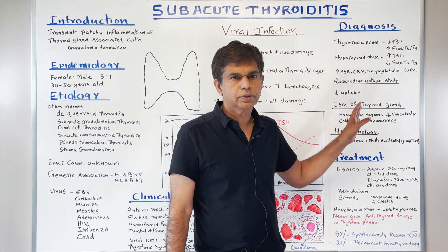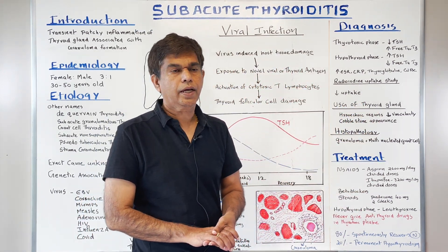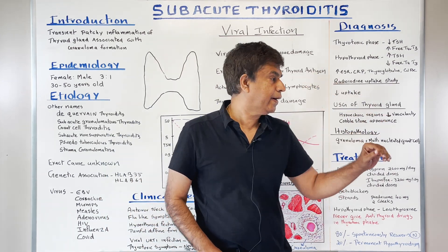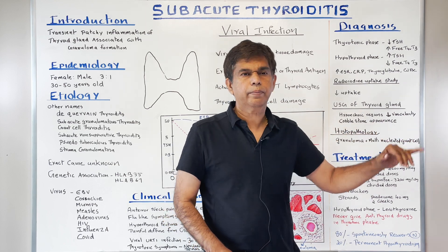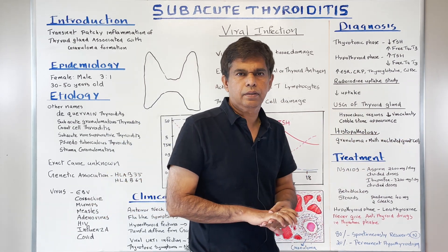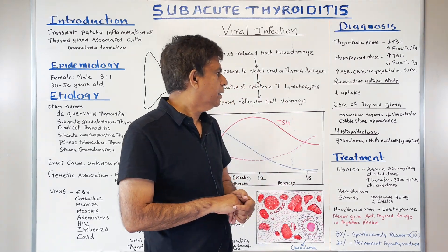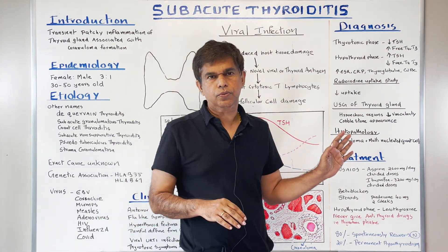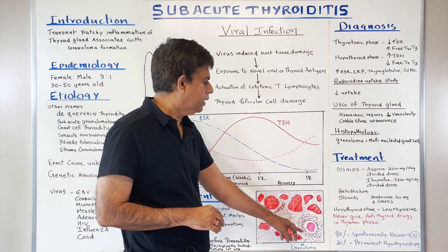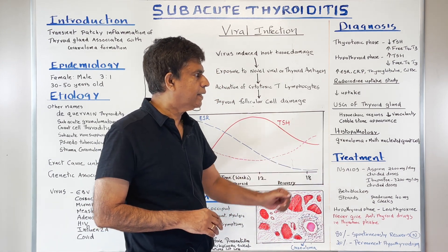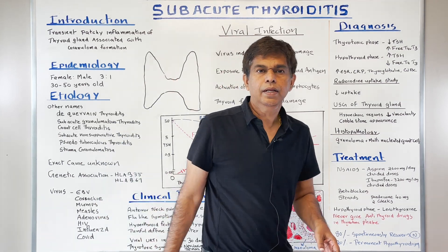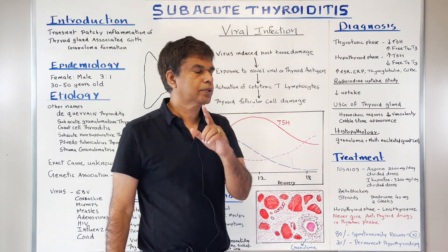Ultrasound of the thyroid will show a hypoechoic region, decreased vascularity, and a cobblestone appearance — these are classic findings. On histopathology, you will see multinucleated giant cells with granuloma formation, which is the classic finding in subacute thyroiditis.